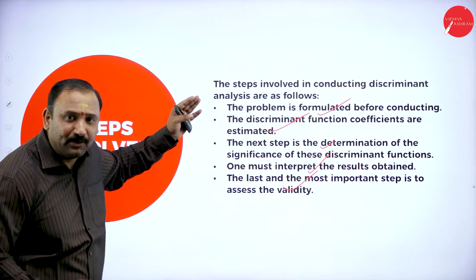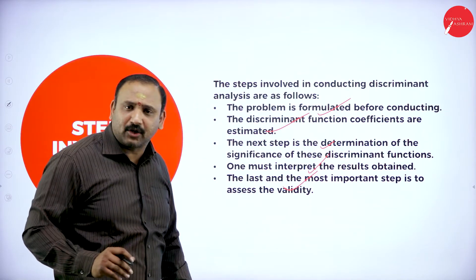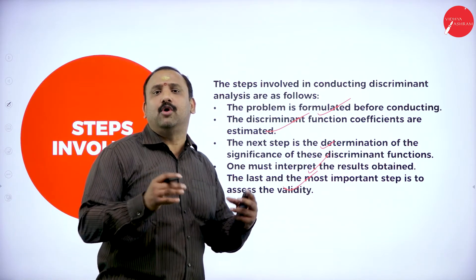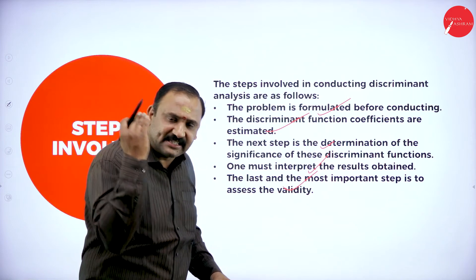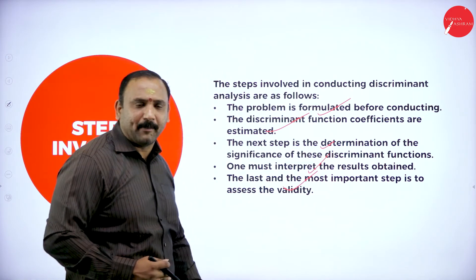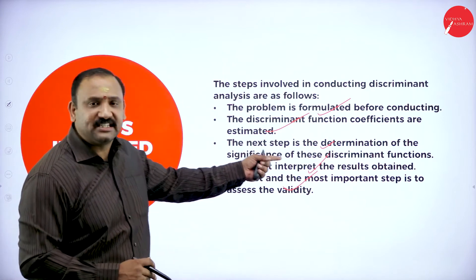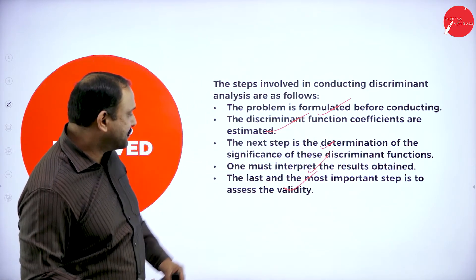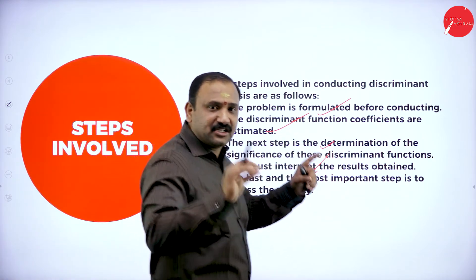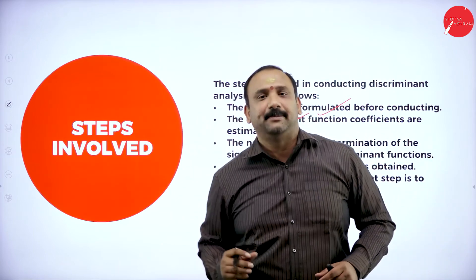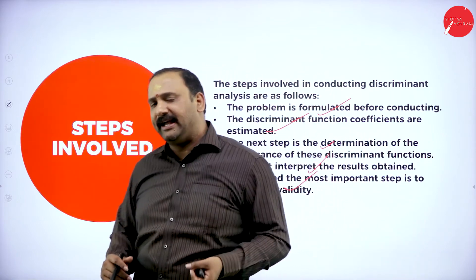The problem is first formulated and structured enough to say, this is what we are going to do. Next, the discriminant function coefficients — what are the coefficients that are part of this entire exercise? Followed by significance — are they really significant and worth enough to get a match? One must interpret the results to find out whether they are matching. The last and most important step is to assess validity — because the result that comes out has to be true and 100% accepted. Validity proves that it is genuine and truthful in terms of the research function.